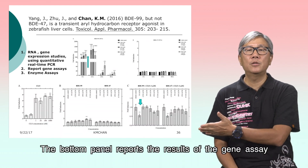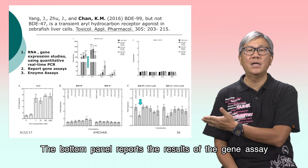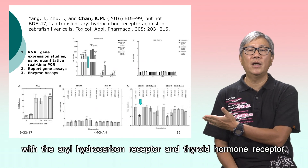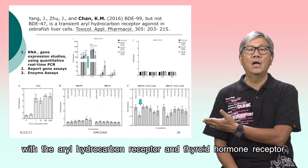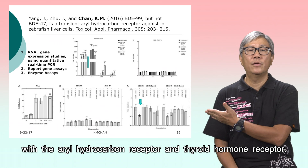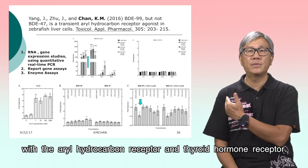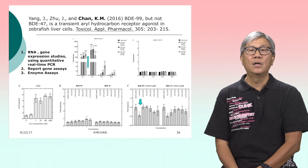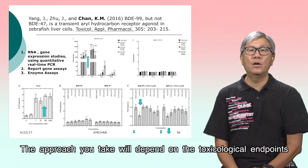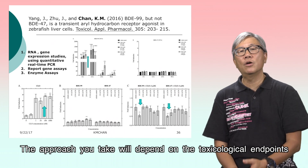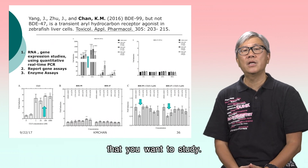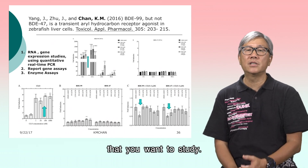The bottom panel reports the results of the gene assays with the aryl hydrocarbon receptor and the thyroid hormone receptor. The approach you take will depend on the toxicological endpoints that you want to study.